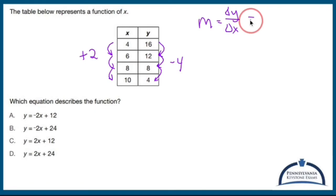What was my change in y? Negative four. What was my change in x? Two. So my slope is negative two.